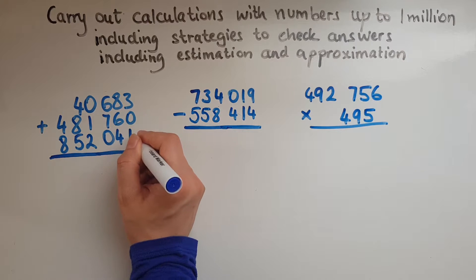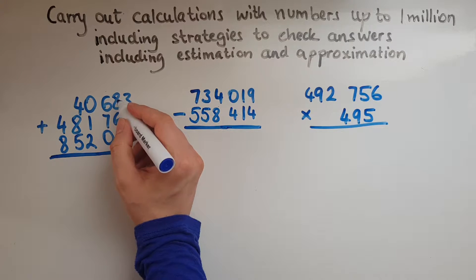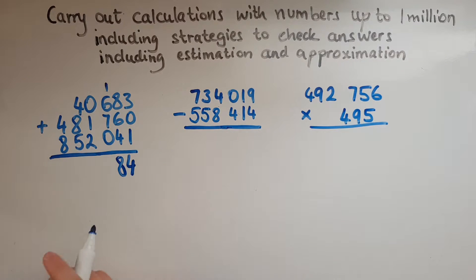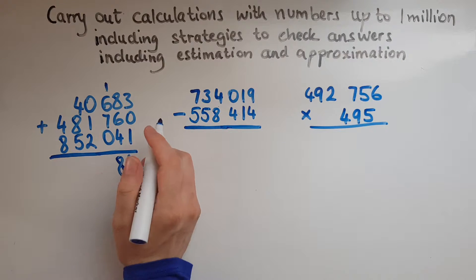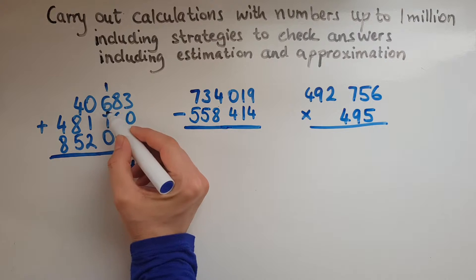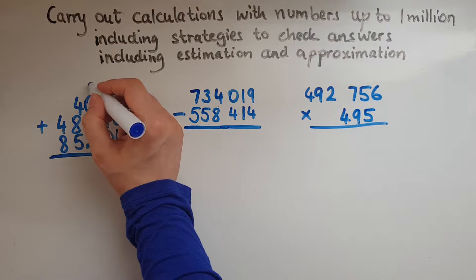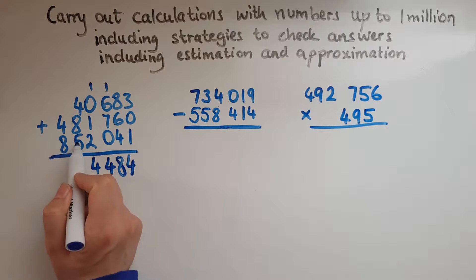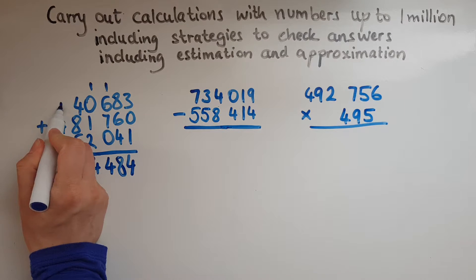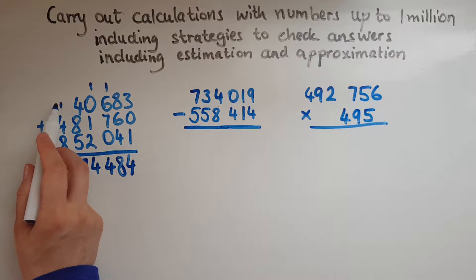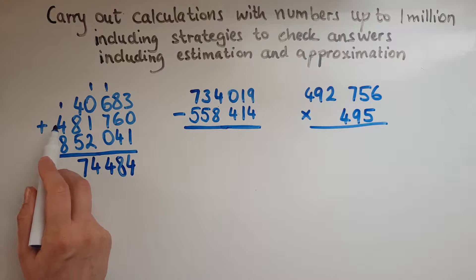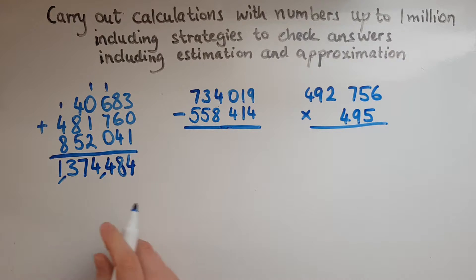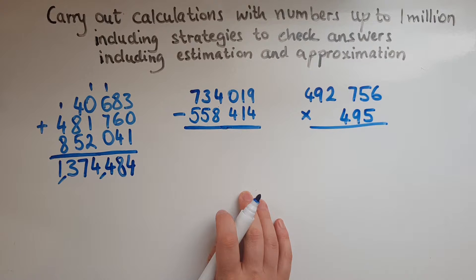So 3 and 0 and 1 makes 4. 8 and 6 makes 14 and the 4 makes 18. So 8 down and the tens are carried over. 6 and 1 is 7 and 7 makes 14. So 4 down and 1 carried over. 1 and 1 is 2 and 2 is 4. 4 and 8 makes 12 and the 5 makes 17. So 7 and 1 carried over. And 1 and 4 makes 5, 5 and 8 makes 13. So the answer is 1,374,484.